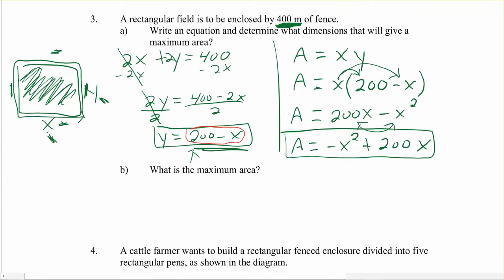So the first one says write an equation to determine. So we figured out the equation, good. And determine what dimensions that will give a maximum area. So we don't really know what dimensions will give a maximum area yet. We just know that like whatever we put in for X will give us some area. To figure out a maximum area, what we need to do now is put this into our calculator. So grab your calculator.